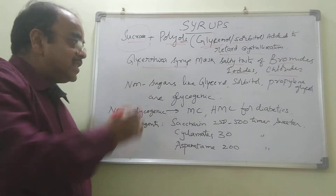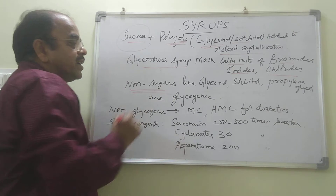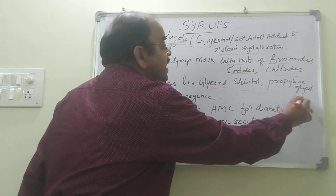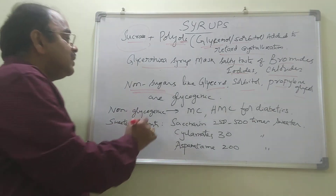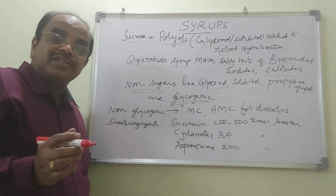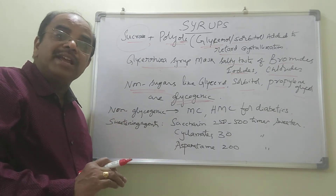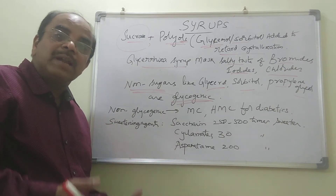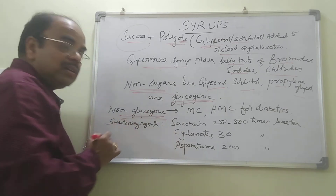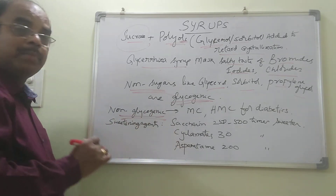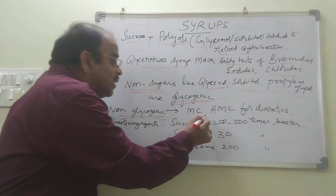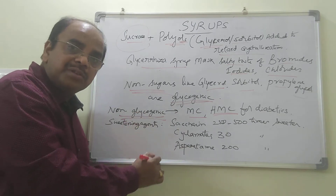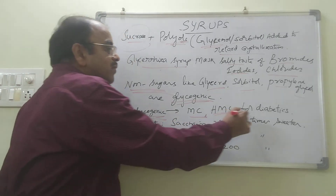Apart from sucrose, glycerol and sorbitol are non-sugars — they are not carbohydrates. You can also add propylene glycol in the preparation of syrups. But these are glycogenic in nature — meaning they convert to glucose in the body. So we cannot use them for diabetic patients. For diabetic patients, we use non-glycogenic substances. To build up the viscosity, we can use methylcellulose or hydroxymethylcellulose for the syrup for diabetic patients.